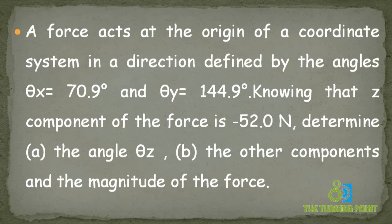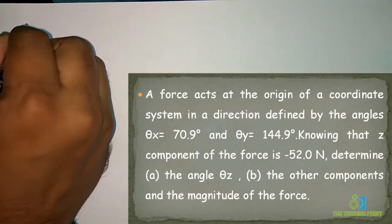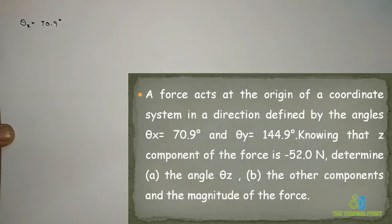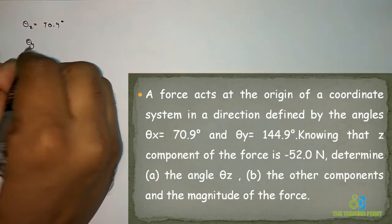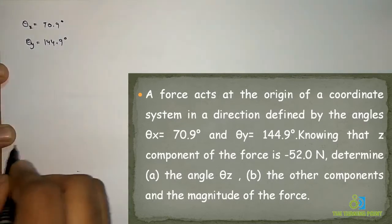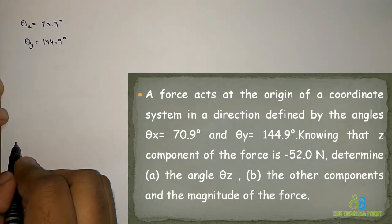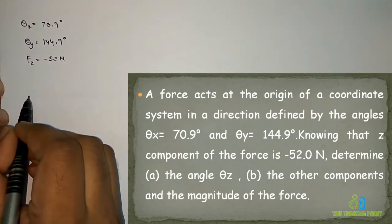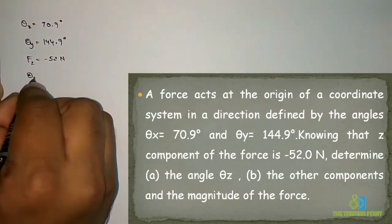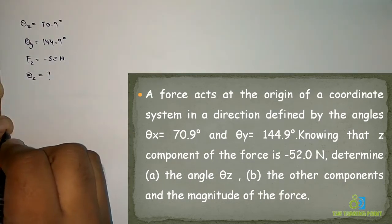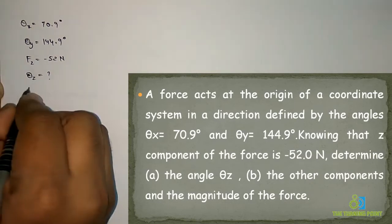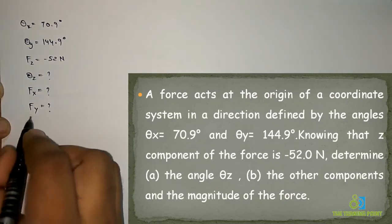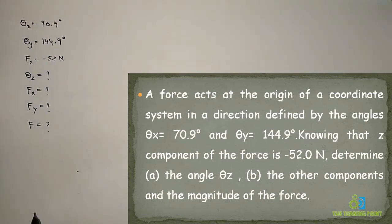First, let us write the given data. Theta x is 70.9 degrees, theta y is 144.9 degrees, and Fz is given as minus 52.0 newtons. We have to calculate the angle theta z, and since the z component is given, the other components means we have to calculate Fx, Fy, and the magnitude of force F.